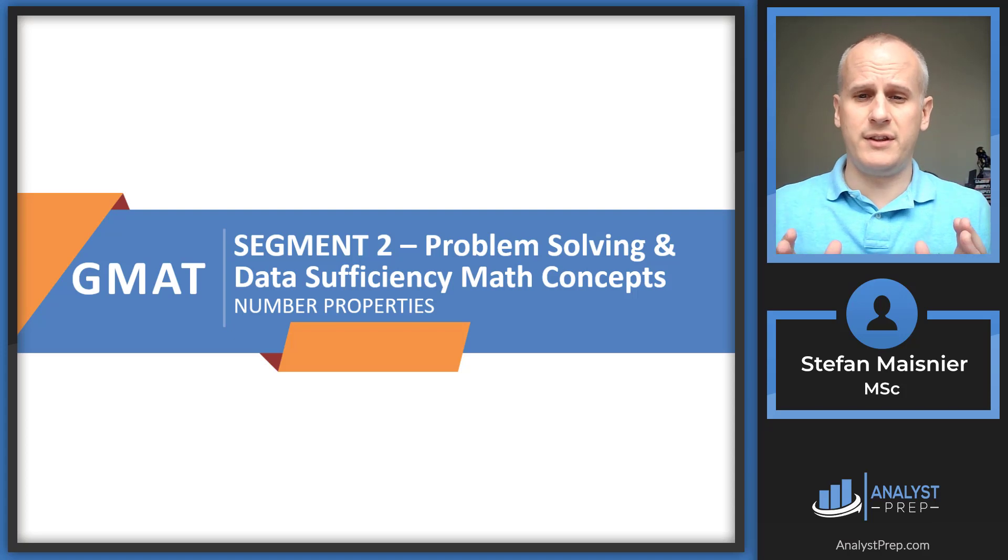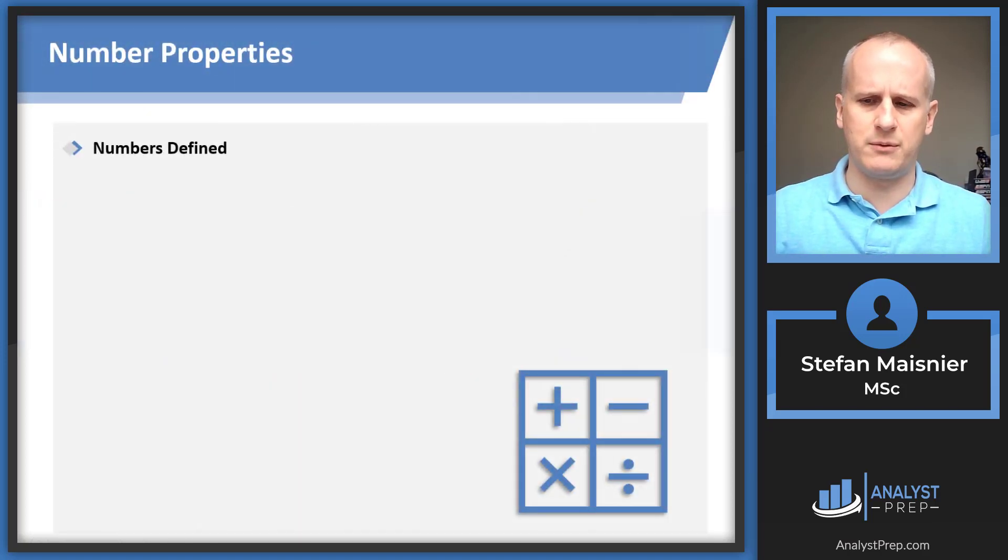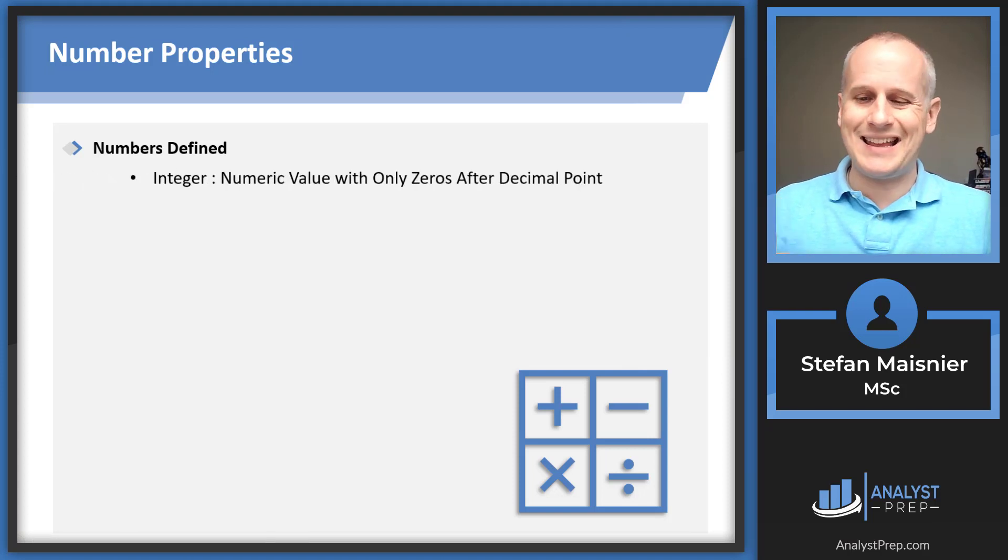Welcome to this lesson on one of the foundational concepts of the GMAT quantitative section: number properties. Let's begin by considering some different definitions that we'll encounter on the exam. An integer is one of the primary definitions you'll need to know. For the purposes of this exam, an integer is just a numeric value with only zeros after a decimal point. So 10.2 would be a non-integer, two-thirds non-integer. In most practical forms on the exam, if you see the term integer, you can just think to yourself there are no fractions allowed for this problem.